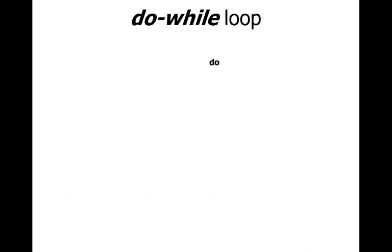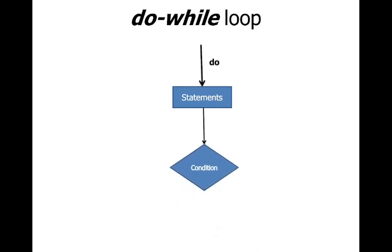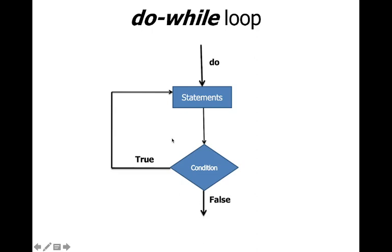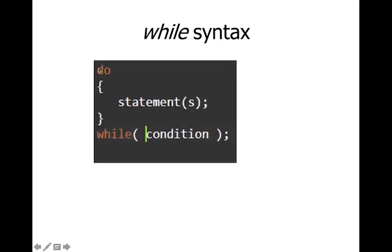This is illustrated in the flowchart of the do-while loop. First, the body of the loop is executed. Then the condition is checked — if true, the body executes again and the condition is rechecked. This repeats until the condition becomes false, at which point the loop exits.